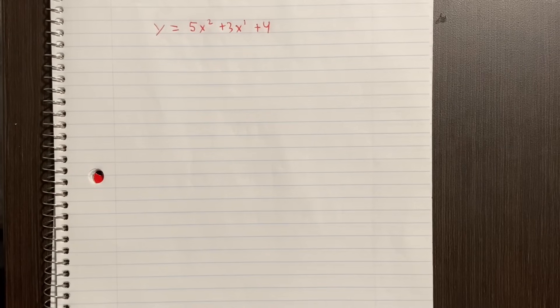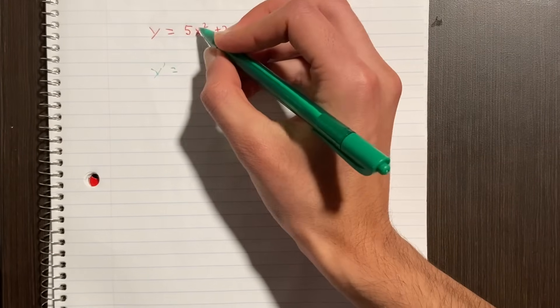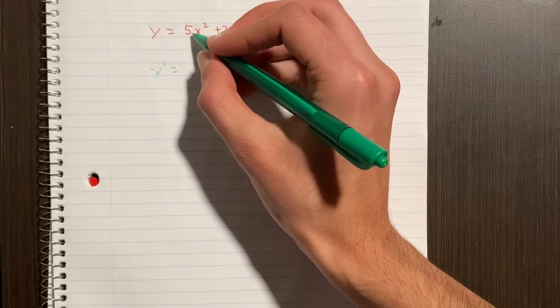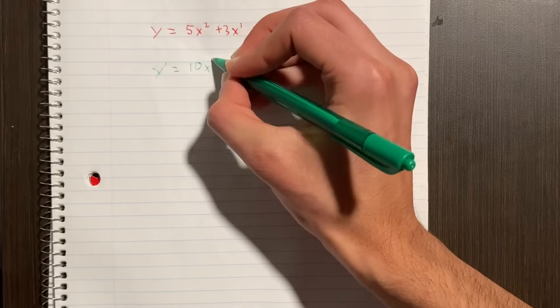So the first thing I'll teach you is how to find the derivative, since that's a big part of calculus. The derivative of y becomes y prime, and then you multiply the exponent by the number in front of x. That's 10x, and then you subtract 1 from the exponent, so that's just 1.